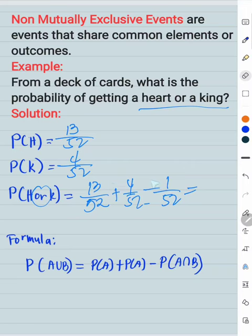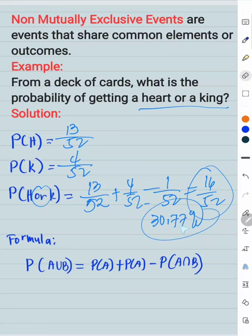So, this is 13 plus 4, 17 minus 1, 16 over 52. Now, you can change this to percent by dividing, then times 100. There is 30.77% probability of getting a heart or king.